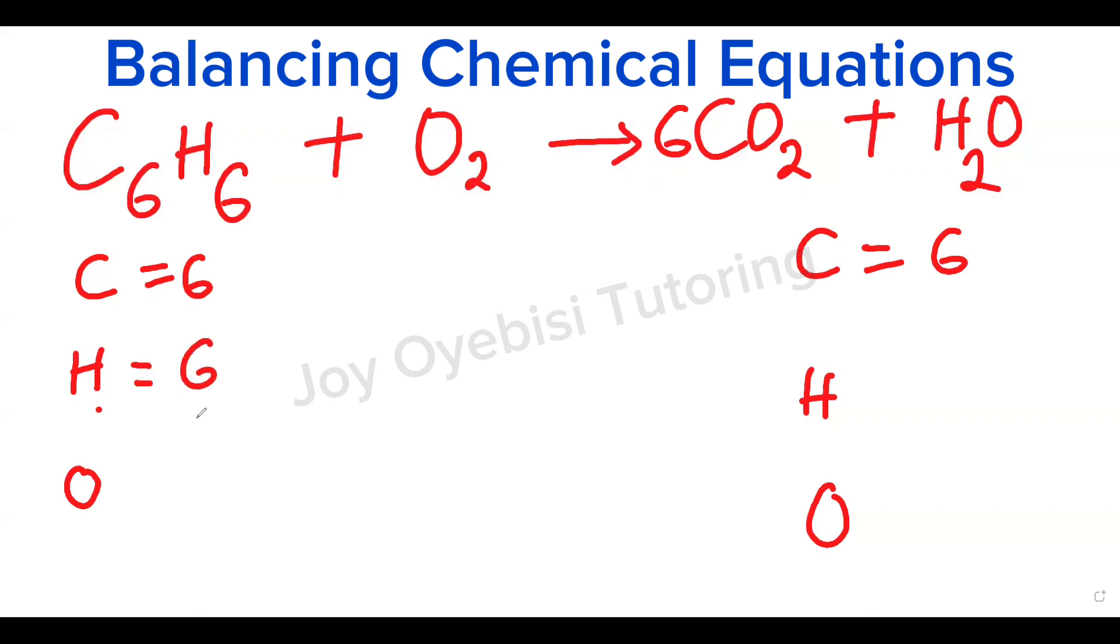Move on to hydrogen. There is six hydrogen on the left. On the right, I have two. Now, if I multiply the two by three, that becomes six, which means I need three to balance the hydrogen. So three times two, that is six.